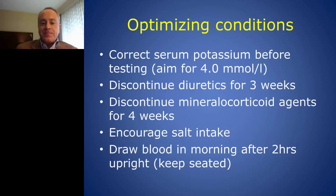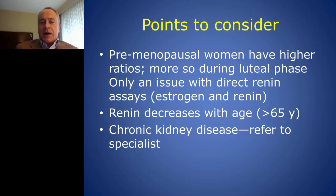Other points to consider: premenopausal women have higher aldosterone-renin ratios related to estrogen release in the luteal phase, which can affect direct renin assays. Renin generally decreases with age; above 65 years, renin decreases. Chronic kidney disease can influence the aldosterone-renin ratio — if renin is being produced by a damaged kidney, that will impair interpretation of a ratio and should be referred to a specialist.